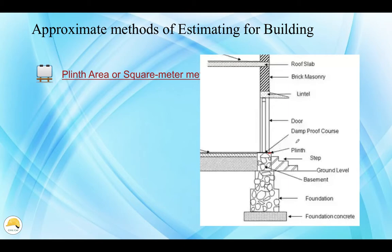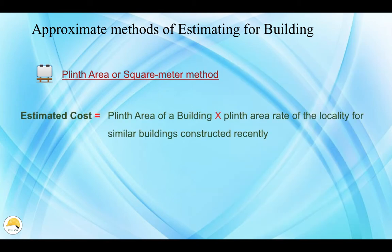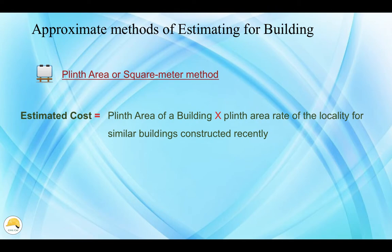Now we need to calculate the plinth area, floor area, carpet area, and covered area — these are some technical terms, which we will detail in the last video. The estimated cost is equal to the plinth area of the building multiplied by the plinth area rate of the locality for similar buildings constructed recently. We need to calculate the estimated cost for the same location.